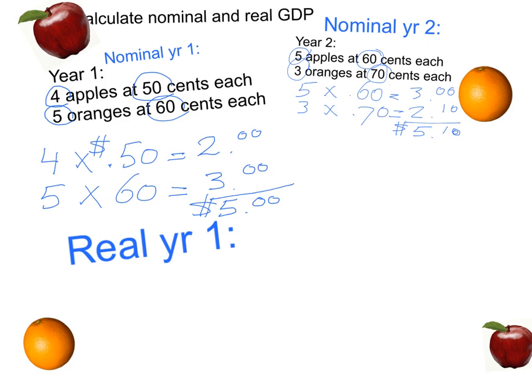Now let's take a look at real GDP in year one. So what does real GDP mean? Well, real GDP for years one and two means that we're going to keep the prices of all the products the same for year one, year two, and if you had a third year, year three, year four.